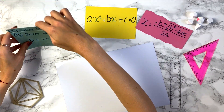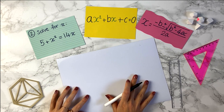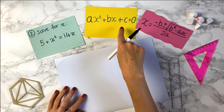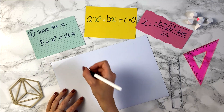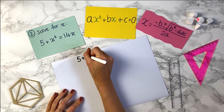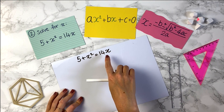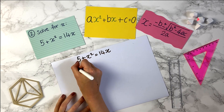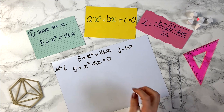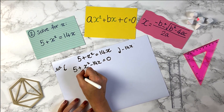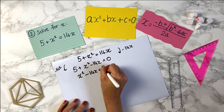Okay, let's try another question: solve for x, 5 plus x² equals 14x. Notice this is not quite in the correct form — we want to write it as ax² + bx + c = 0 in order to use the quadratic formula. So let's rearrange it. We currently have 5 plus x² equals 14x. We want a 0 on one side, so we can minus 14x from both sides. Then we rearrange the left-hand side to get x² minus 14x plus 5 equals 0.